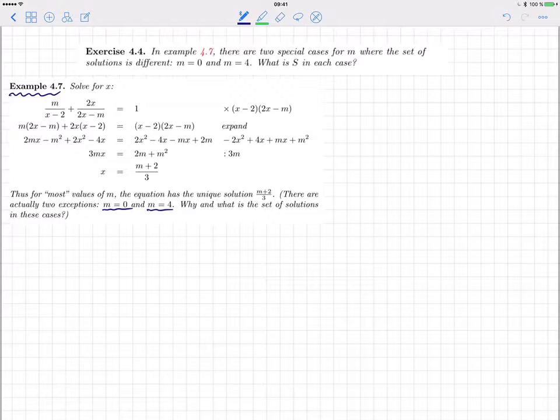The value M equals zero is due to this division by 3M, which assumes that M is not zero. However, if M equals zero, then this equation 3Mx equals 2M plus M squared is always true. This is zero, this is zero.